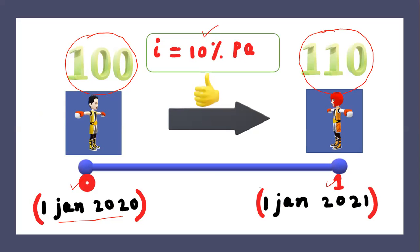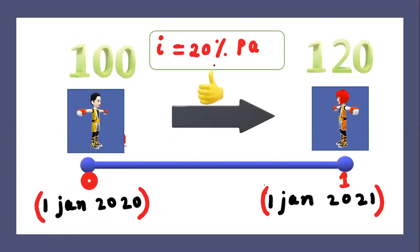If you deposit for one year you will get an extra amount. If you deposit for two years you will get more. However, in this case you deposited for one year and want to withdraw it on 1 January 2021, so you will get 110. However, if the interest rate is 20% then you will get 120 — 20 extra. If you deposit for one year you will get 20 extra. So simple.